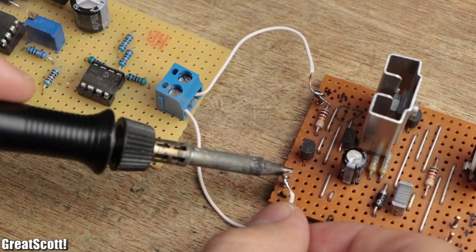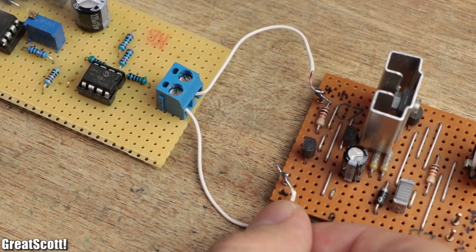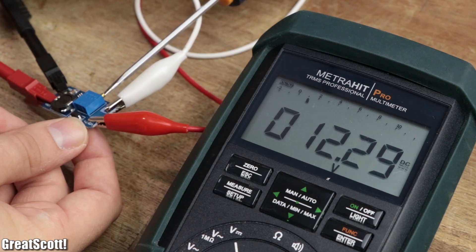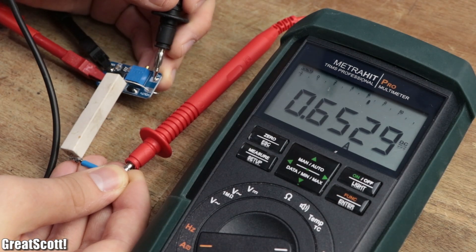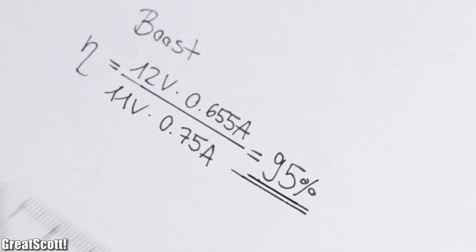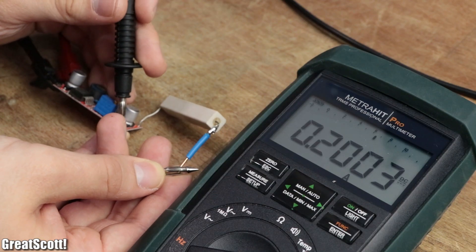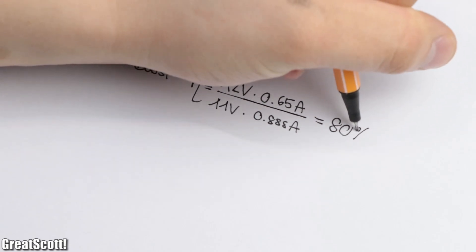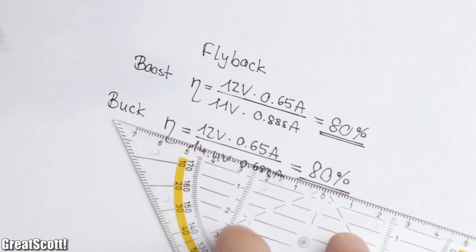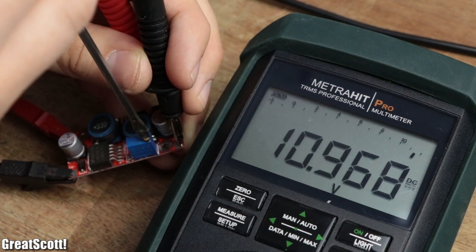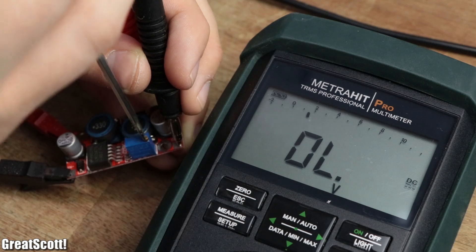But it is mentionable that there are also disadvantages. In my application example here, the boost converter reaches an efficiency of 95%, the buck converter an efficiency of 88%, and the buck-boost converter only an efficiency of 80% in boost and buck modes. So the circuit can do both, but not as good as each function individually.